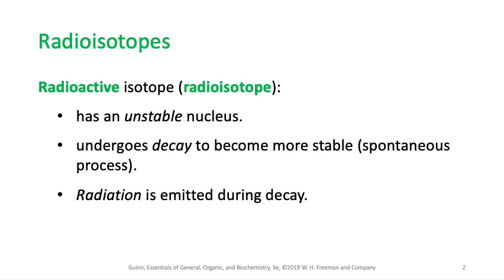But there are some reactions that don't involve valence electrons or any electrons at all — they involve subatomic particles: protons and neutrons. Those reactions that use protons and neutrons within the nucleus are called nuclear reactions, which is different from chemical reactions driven by valence electrons.